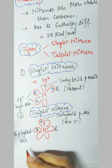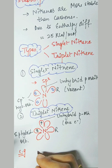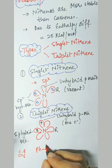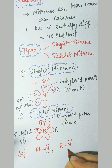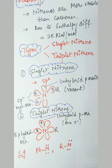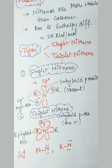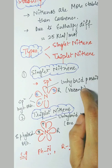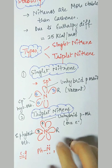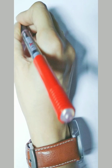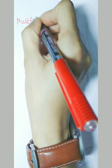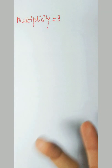Examples of nitrines include Ph-N (phenyl nitrine) or any alkyl group attached with the nitrine. Regarding multiplicity: in the last session we said singlet carbene has multiplicity one and triplet carbene has multiplicity three. For nitrines, the multiplicity is three. We will discuss how to calculate the multiplicity of a particular compound in further coming videos.